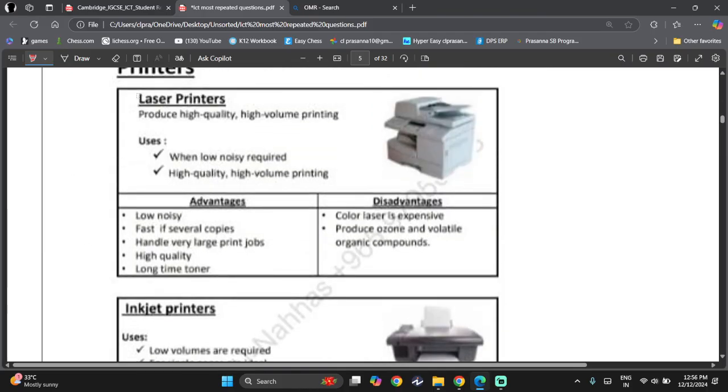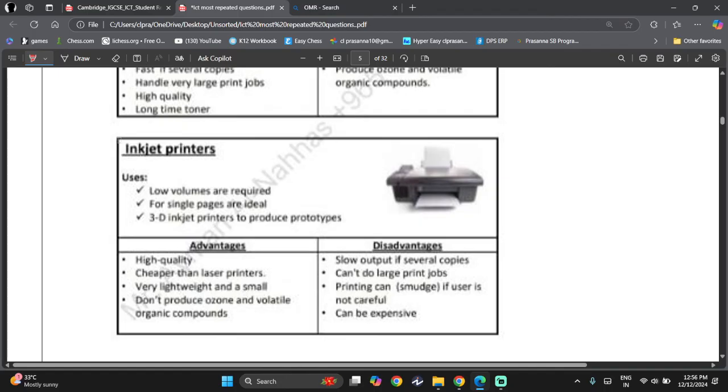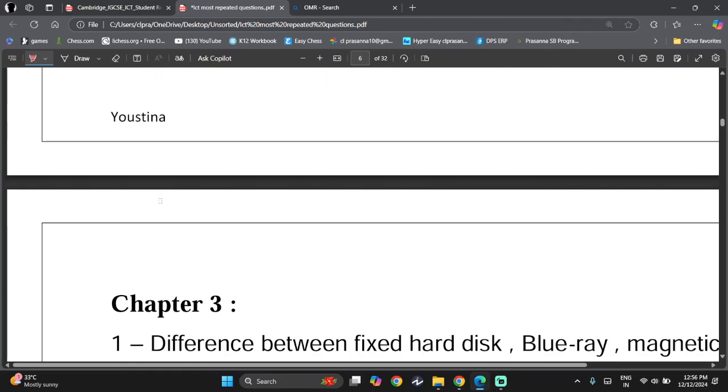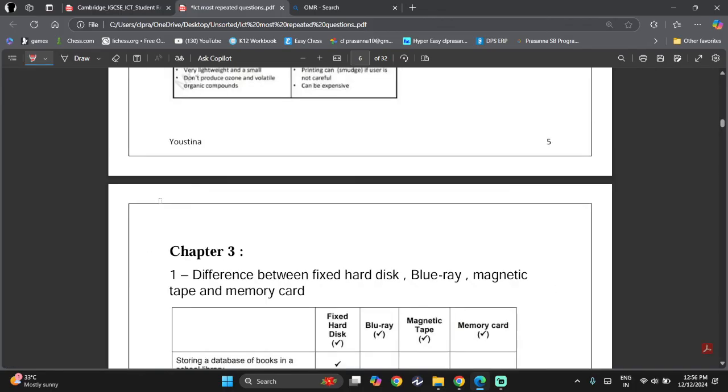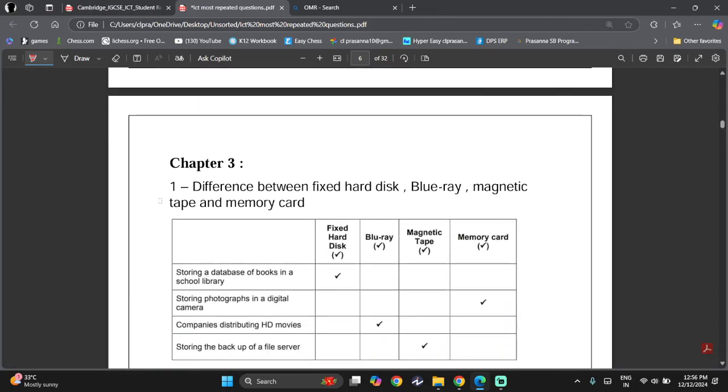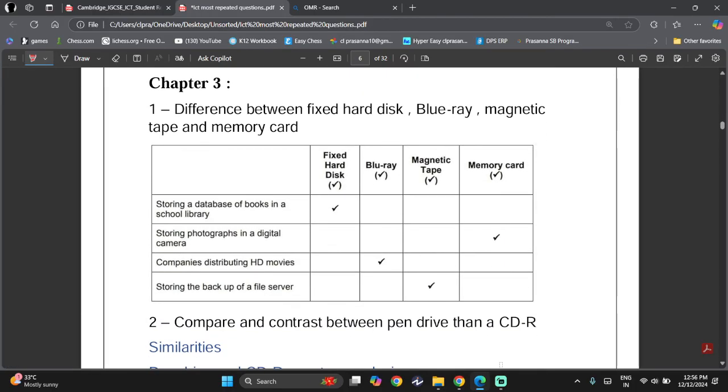Then the printers, we have different types. We have laser printers. They produce high quality and high volume printing. And we have inkjet printers that produce fairly enough quality by low volume. It's ideal for single pages and used for students and all that. And that's all for this video. We'll see you in the next video where we discuss chapter 3. Till then, ta-da!